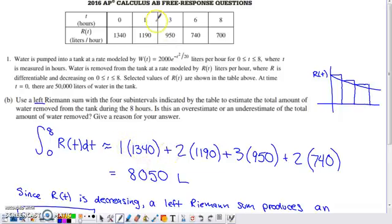We're going to add on the area of the next rectangle. The next rectangle ranges from t value of one to t value of three, so it has a width of two and the height comes from the function value at the left endpoint, 1190. Next rectangle width of three times 950 for the height, and then the last rectangle width of two times 740 for the height.